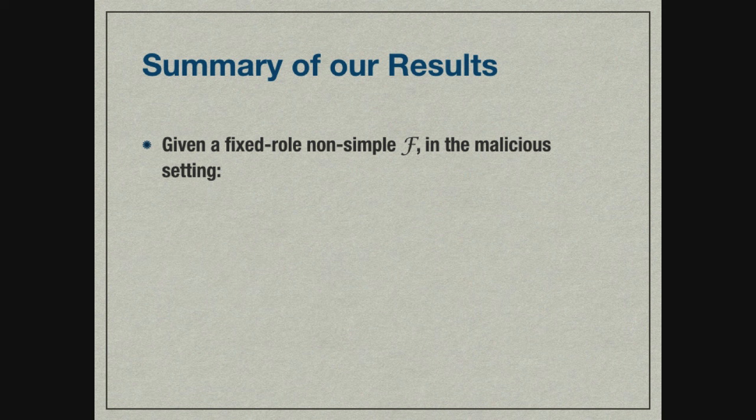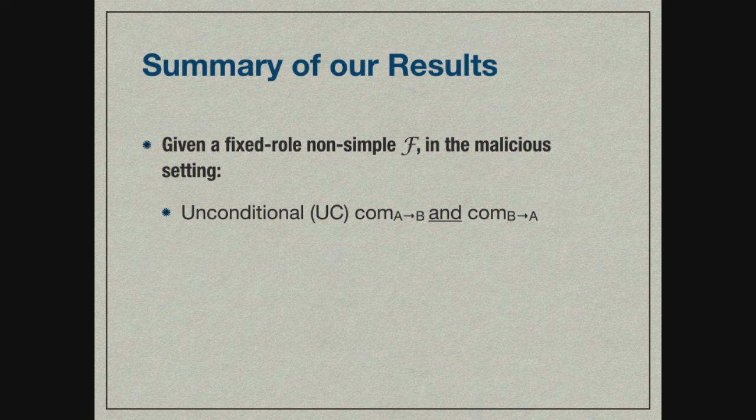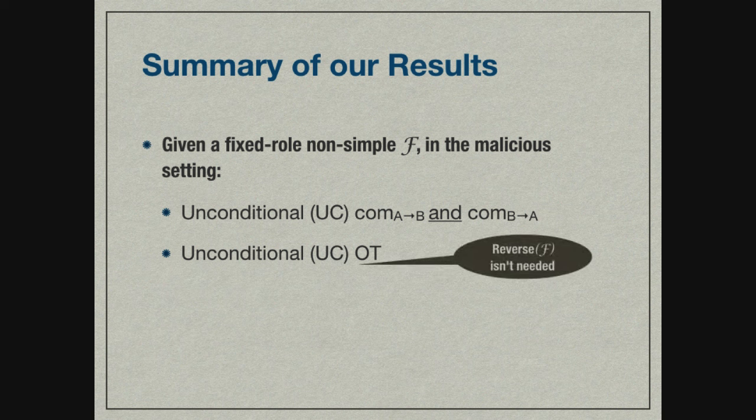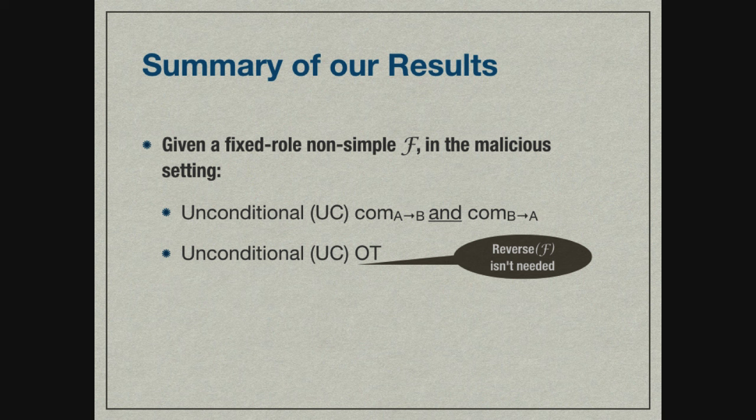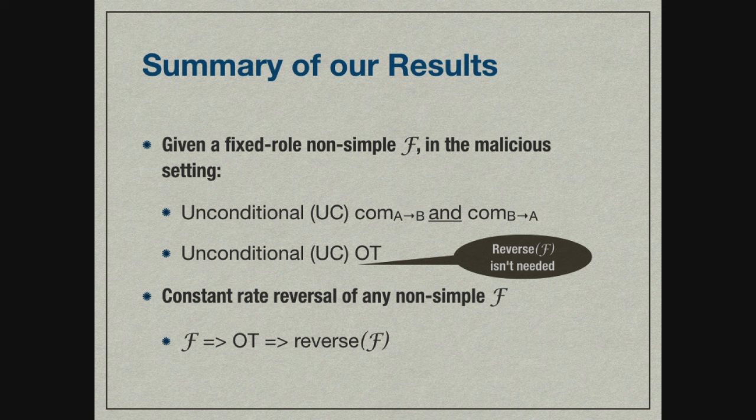I'd like to conclude by summarizing our results. We show that given a fixed role non-simple functionality F in the malicious setting, it is possible to obtain unconditionally secure commitments both from Alice to Bob and from Bob to Alice. It's also possible to obtain unconditional UC security without the need to use the reverse of the functionality. Finally, we show that any non-simple F, or basically any F that implies OT, can be reversed at constant rate.